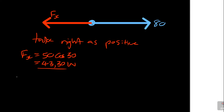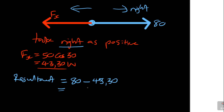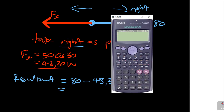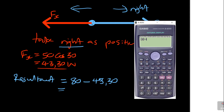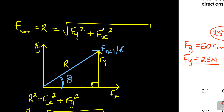Now, if we want to find the resultant of the horizontal components — taking right as positive — this direction is to the right, so it's 80 newtons. Anything going in the opposite direction, you subtract: minus Fx, which is 43.301. So the resultant horizontal is 80 minus 43.301, which gives me 36.7 newtons. So this is my resultant Fx — the resultant in the horizontal — and that is the one I want to use.